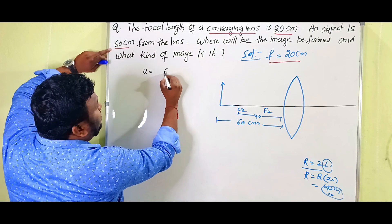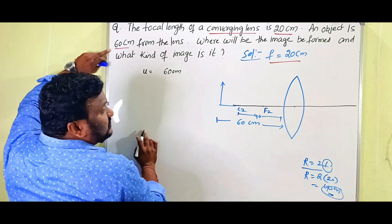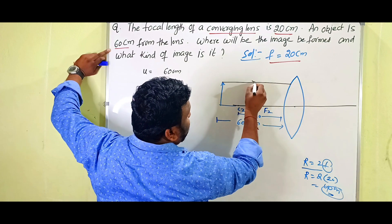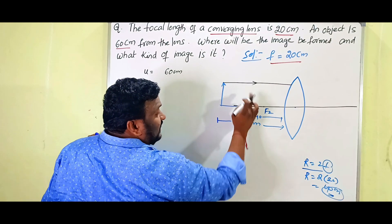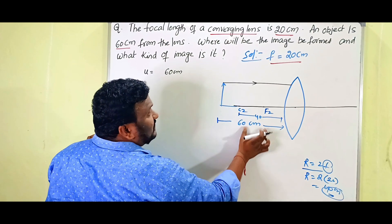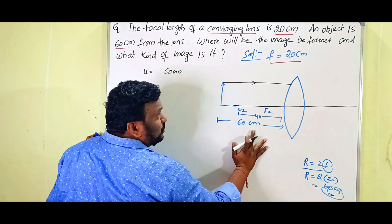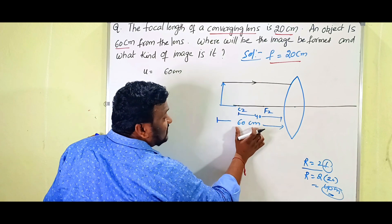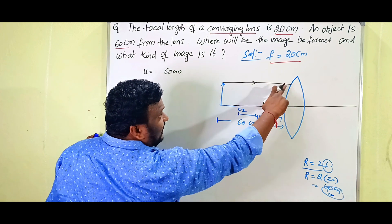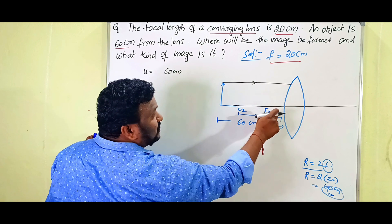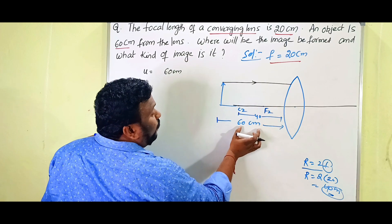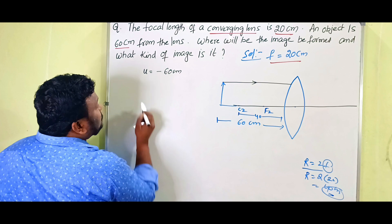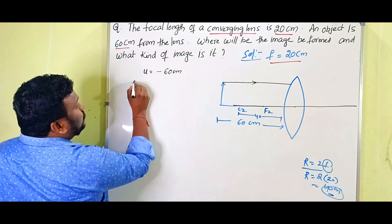The object distance u is given as 60 centimeters. The object is on the left side of the lens and light is moving to the right. According to sign convention rules, distances measured in the opposite direction of incident light are taken as negative. So u equals minus 60 centimeters.